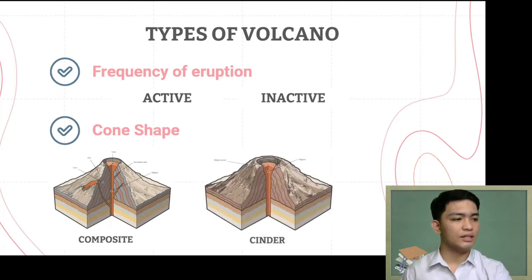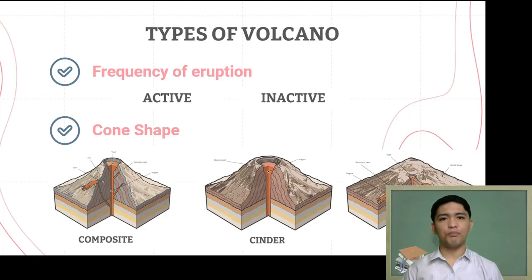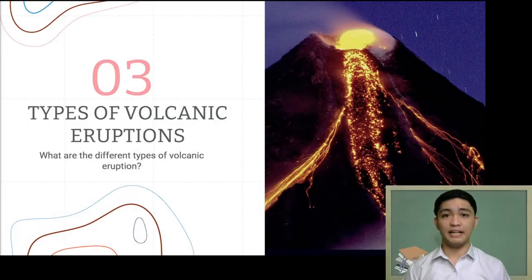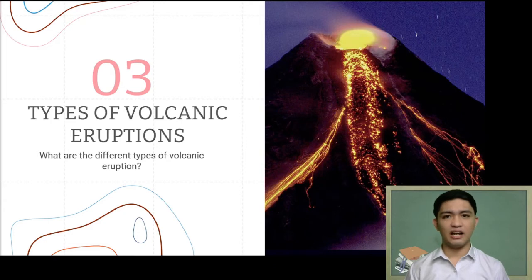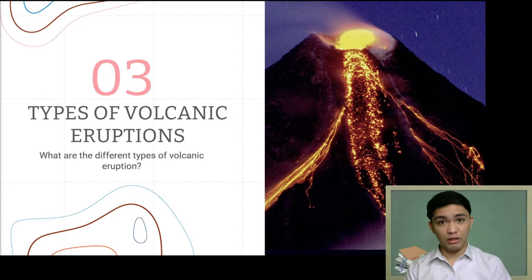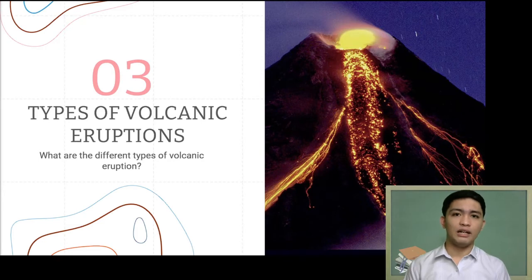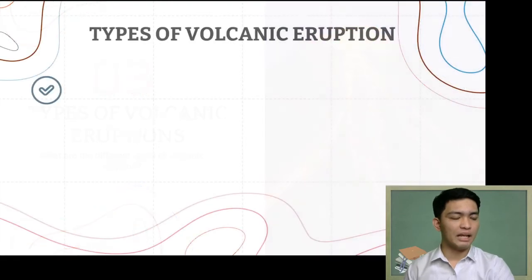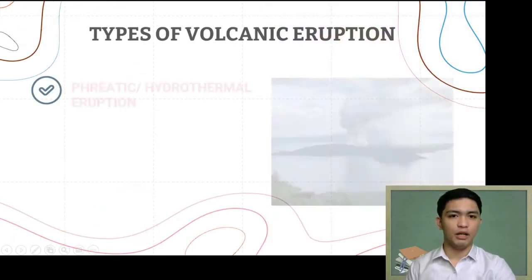We will now proceed to the third section: types of volcanic eruptions. Volcanoes do not erupt the same way — some erupt violently while others erupt less violently. In general, volcanic eruptions can be classified as either explosive or violent, or non-explosive, referred to as effusive. However, the classification is not that simple — we actually have five very specific types of volcanic eruptions.